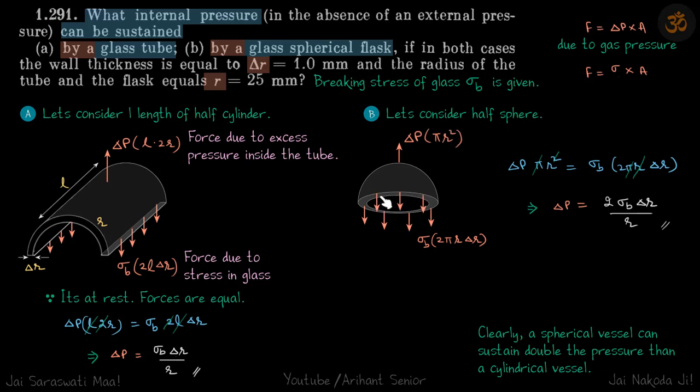Now let's consider hemisphere, same material and same thickness. This time the upward force due to the pressure inside will be delta p into pi r squared, and downward force due to stress will be sigma b into cross sectional area, that is 2 pi r delta r. Again we will balance the forces and we'll get delta p to be 2 sigma b delta r by r.